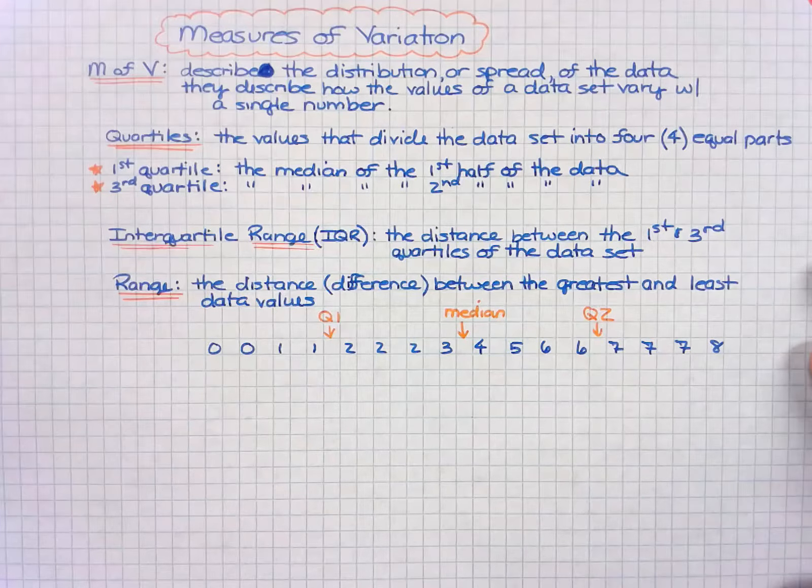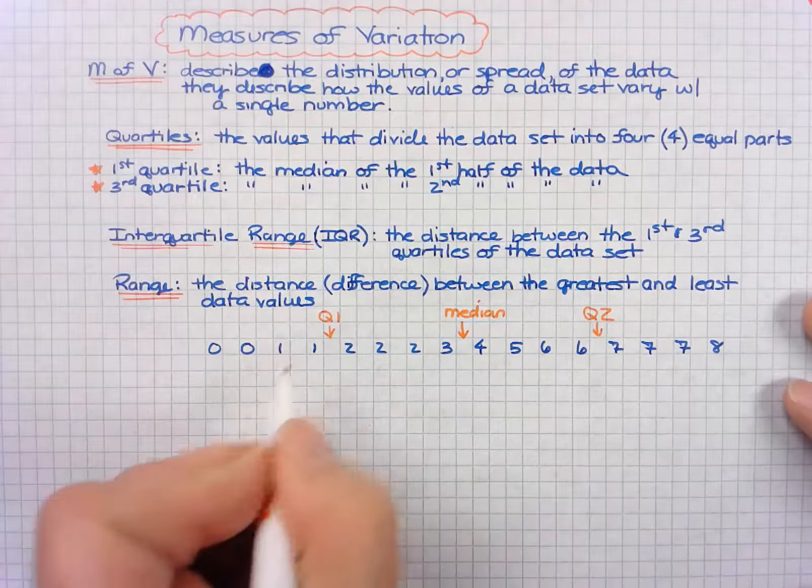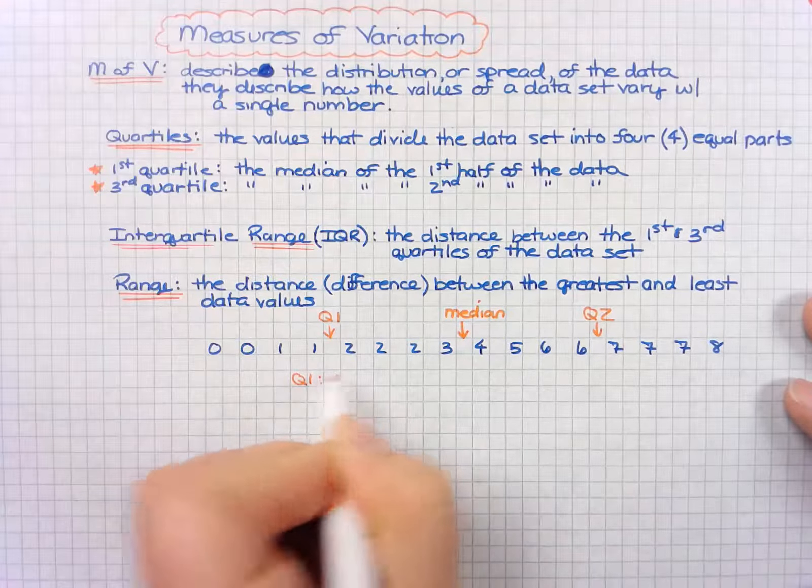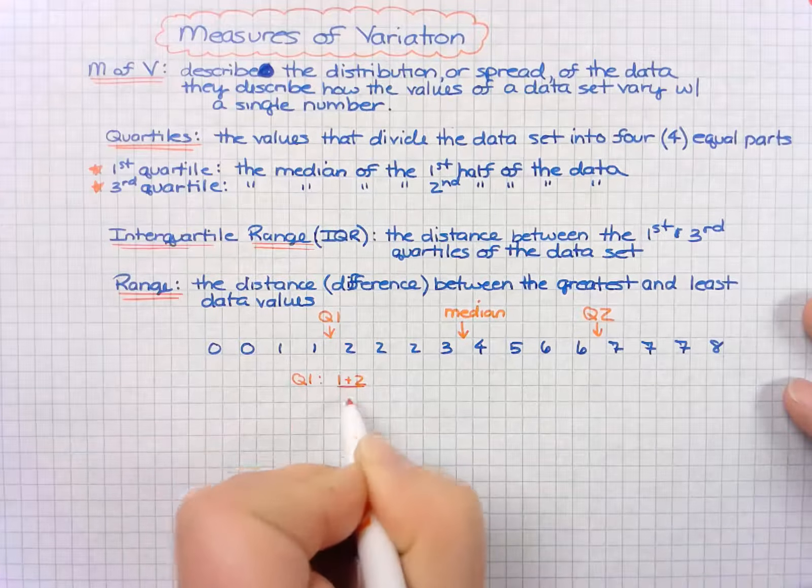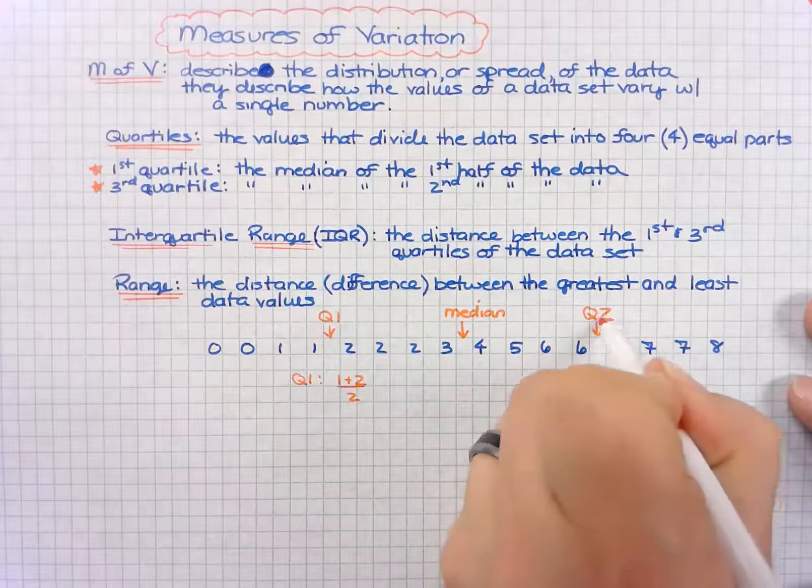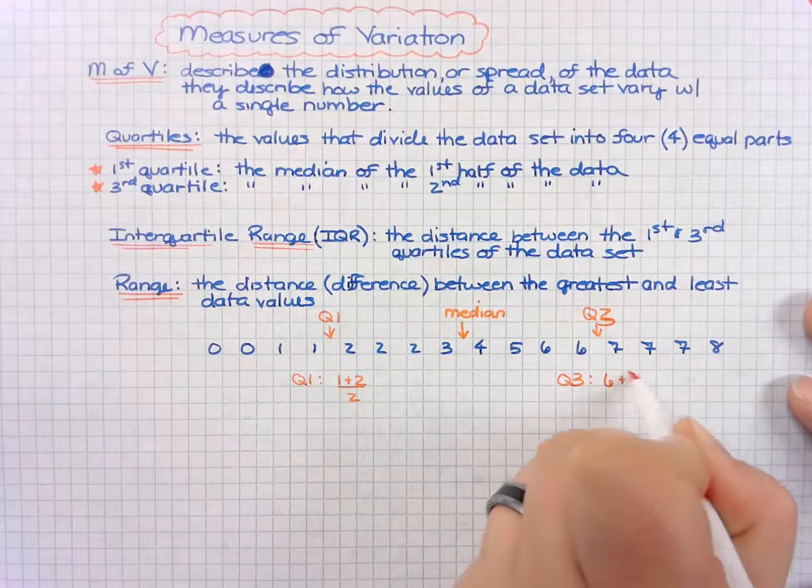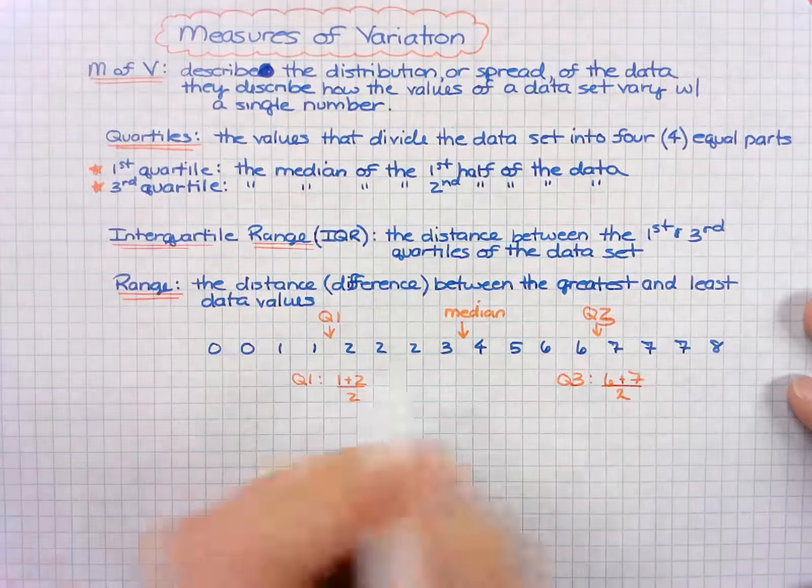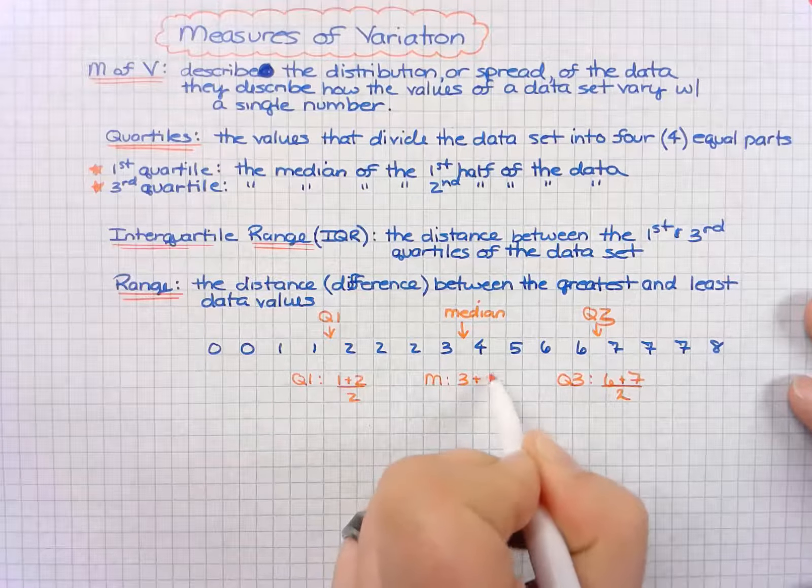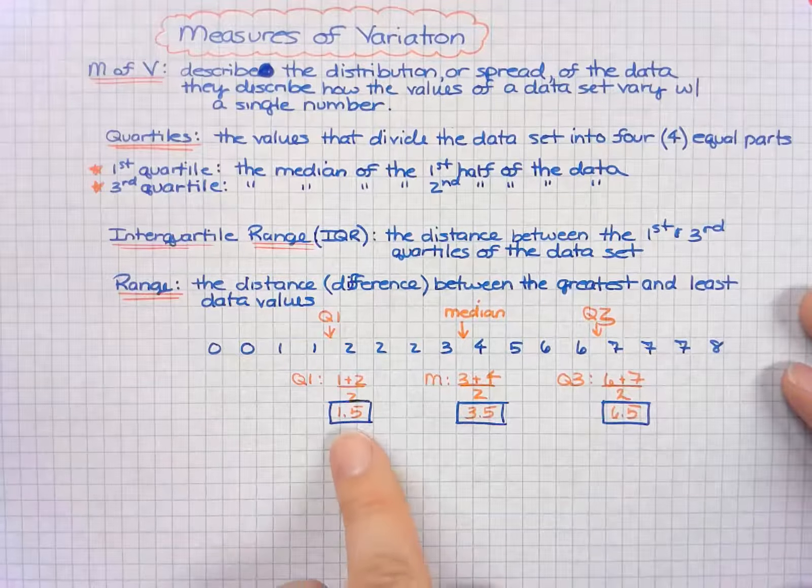We can actually find some values here. In this case, quartile one is the value in between, which is the average. So we have to take 1 plus 2 and divide by 2. Quartile three is 6 plus 7 divided by 2, and the median in this case is 3 plus 4 divided by 2. So we get 1.5, 3.5, and 6.5.